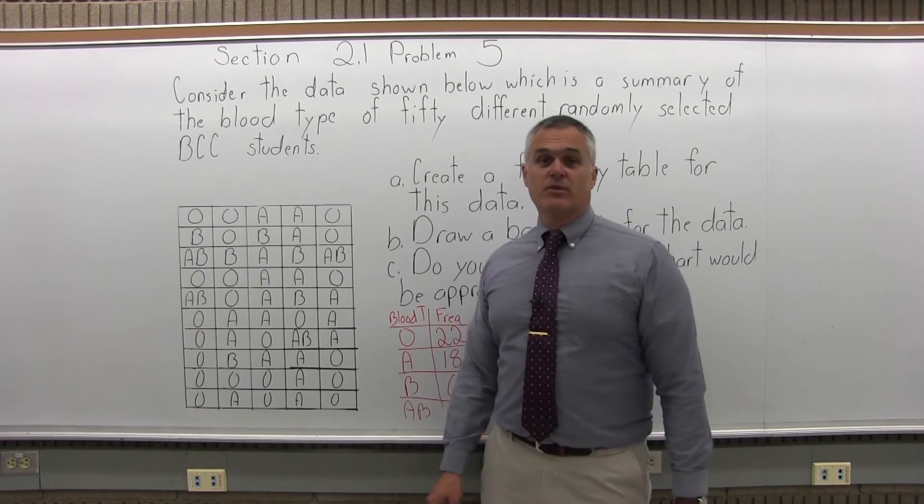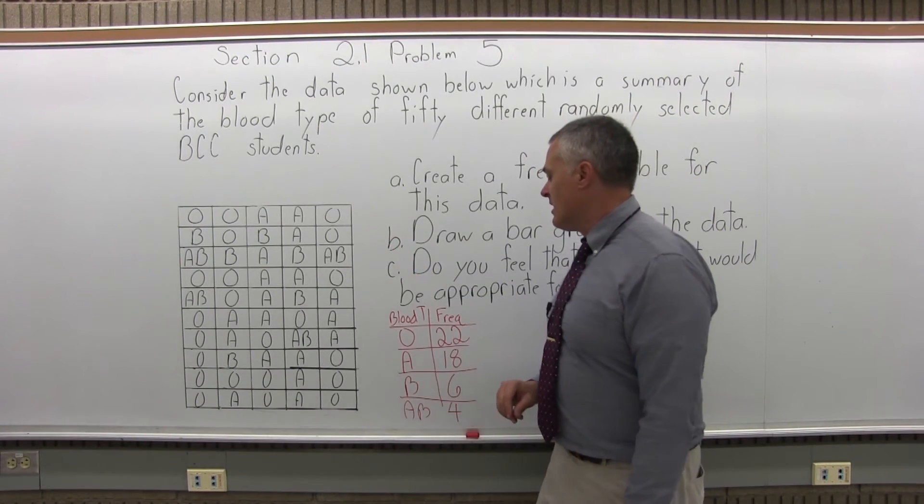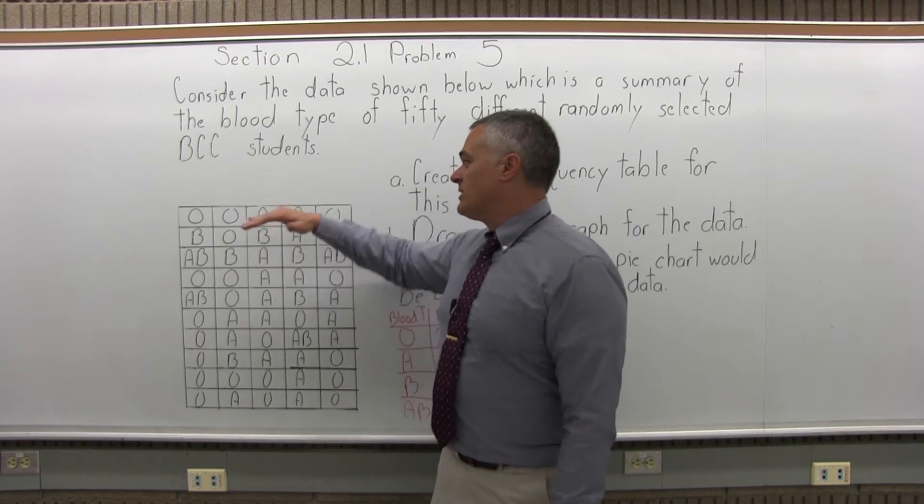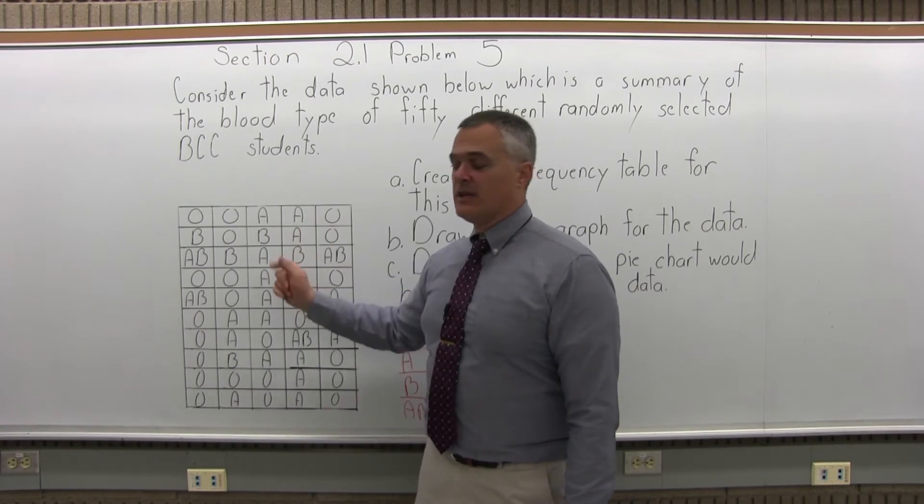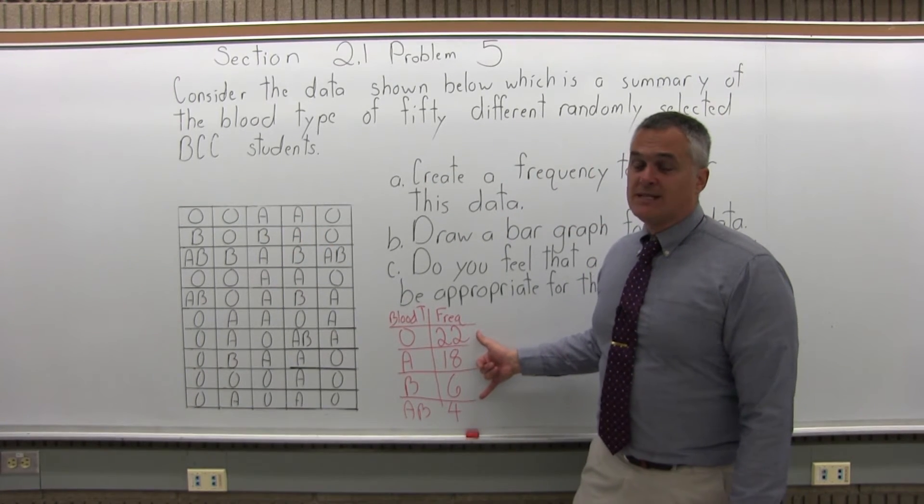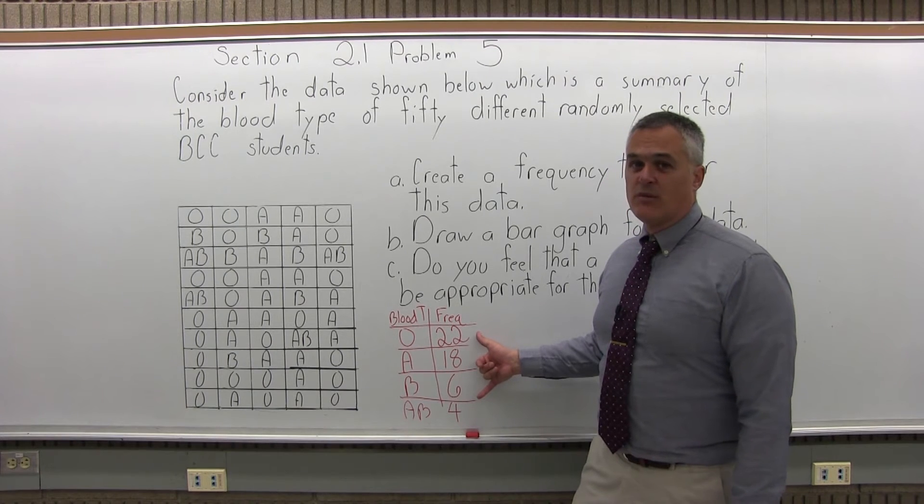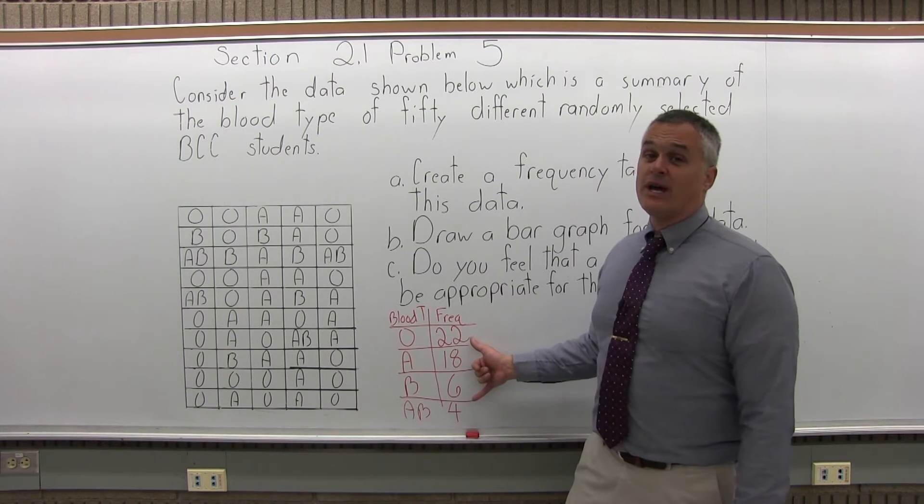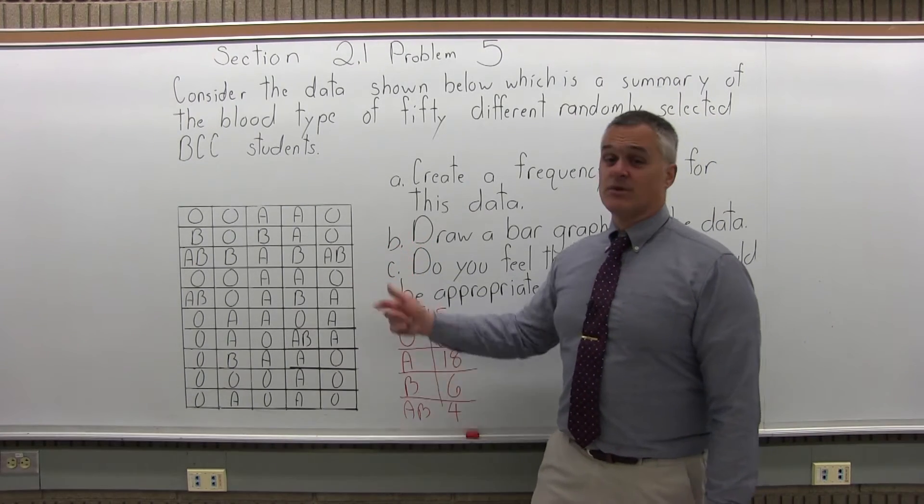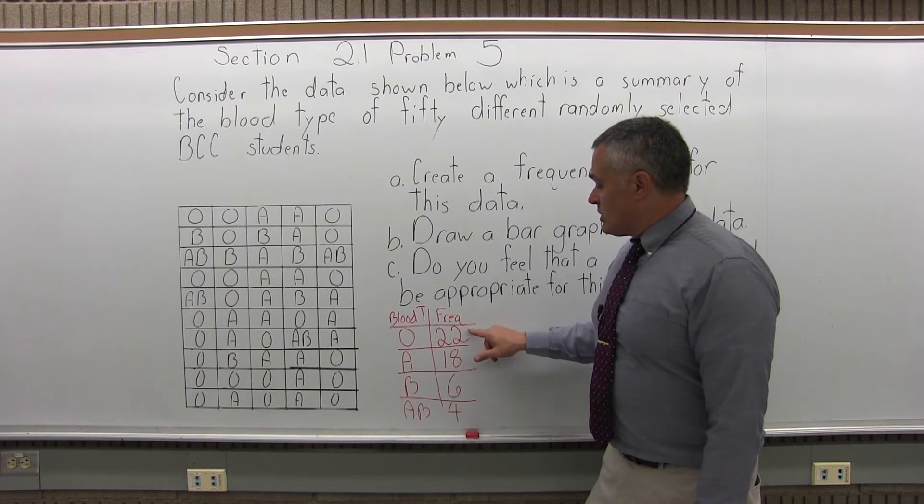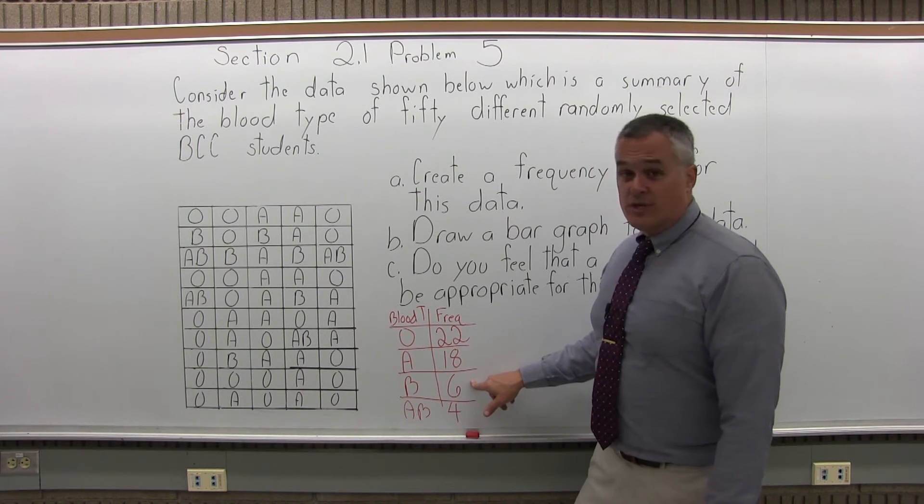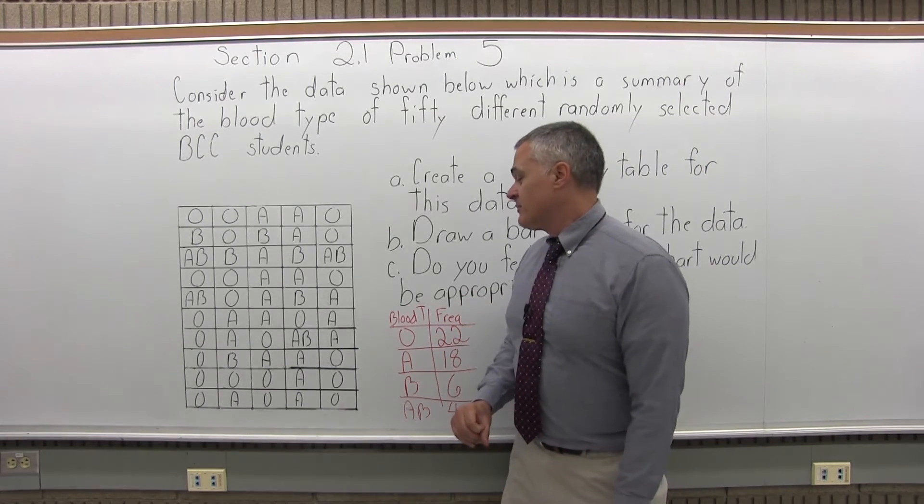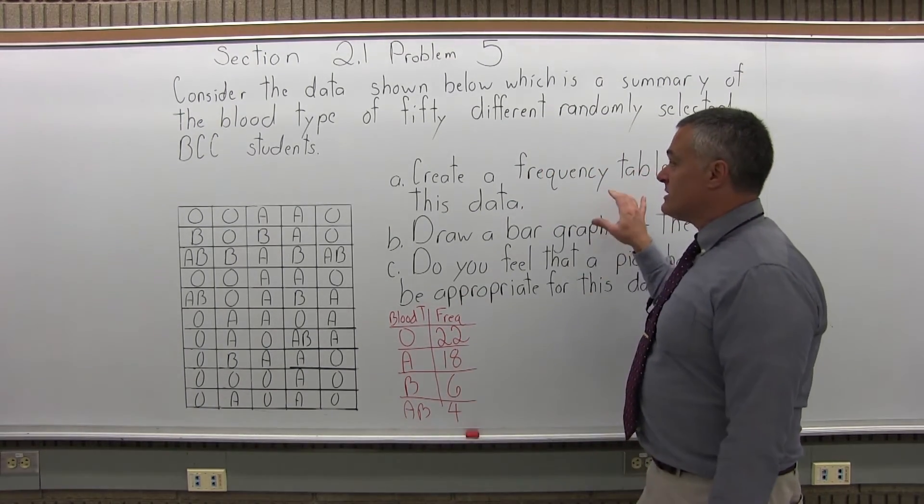So that's a frequency table for the different blood types for the 50 students in our survey. And it's not a bad check. The little table given has 10 rows of 5 columns, so 50. Add up the frequencies. If it adds up to 50, it's a good indication that you probably counted right. It's not a guarantee - you may have made two mistakes that canceled each other out. But if it does not add up to 50, then you surely made a mistake. So 22 and 18 is 40, 40 plus 6 is 46, 46 plus 4 is 50. So that's a good sign. So there's our frequency table for part A.